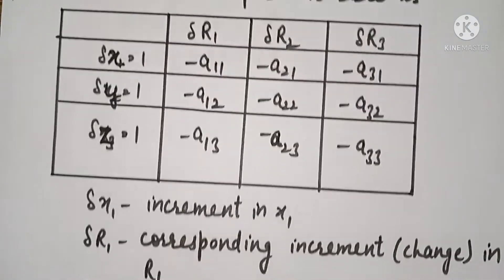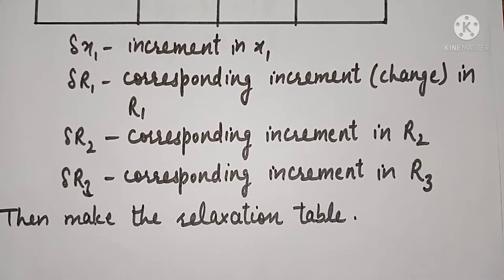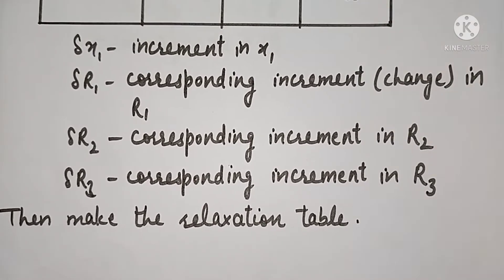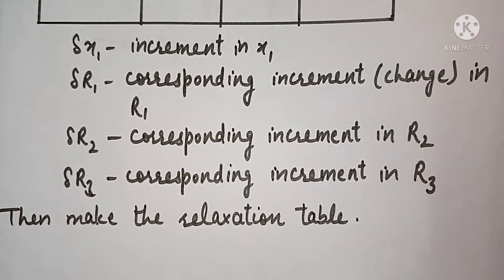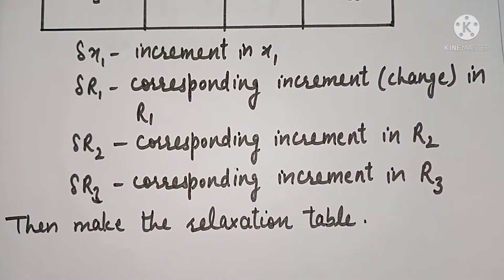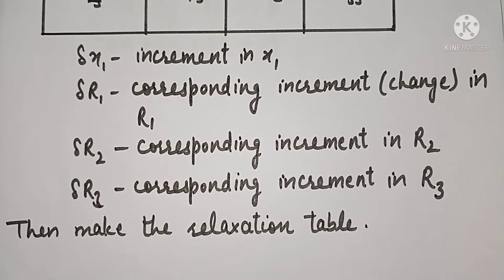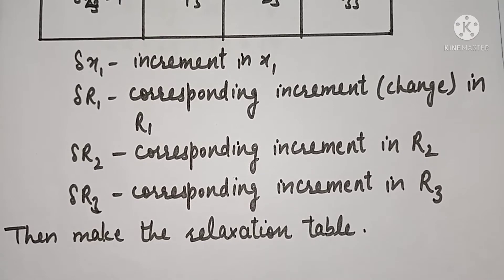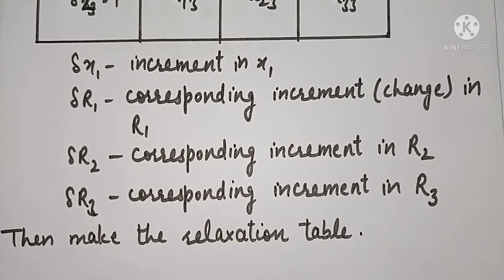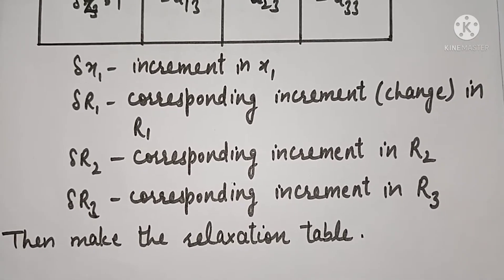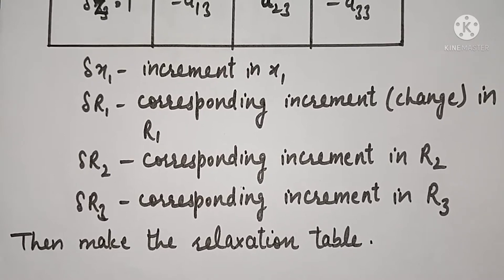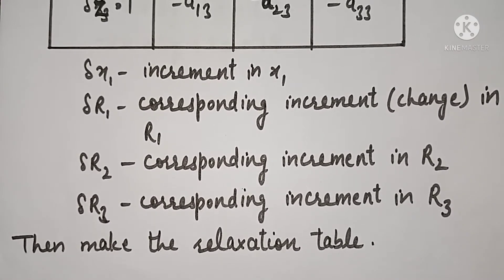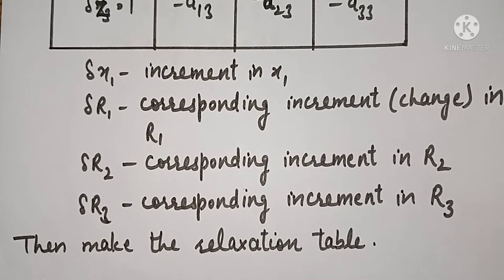इसके बाद हमें एक relaxation table बनानी होती है। Relaxation table का process हम numerical example से ही समझेंगे। यह process तब तक चलेगा जब तक आपके पास 0 के nearer values नहीं आ जाती। उसके बाद, x में जितने भी increments हुए उन सब को add करेंगे तो x की value आएगी; y के increments को add करेंगे तो y की value; और z के increments को add करेंगे तो z की value आ जाएगी।